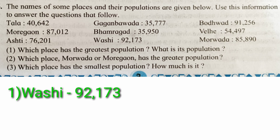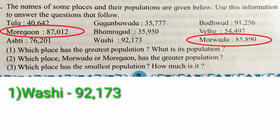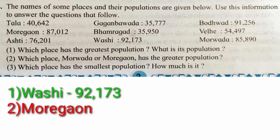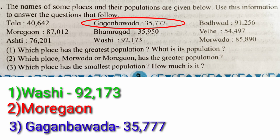The second question: which has the greater population — Morewada or Moregaon? Morewada's population is eighty-five thousand eight hundred and ninety, and Moregaon's is eighty-seven thousand and twelve, so Moregaon has the greater population. The third question: which place has the smallest population? Thirty-five thousand seven hundred and seventy-seven is the smallest, so Gagamwada has the smallest population — 35,777.